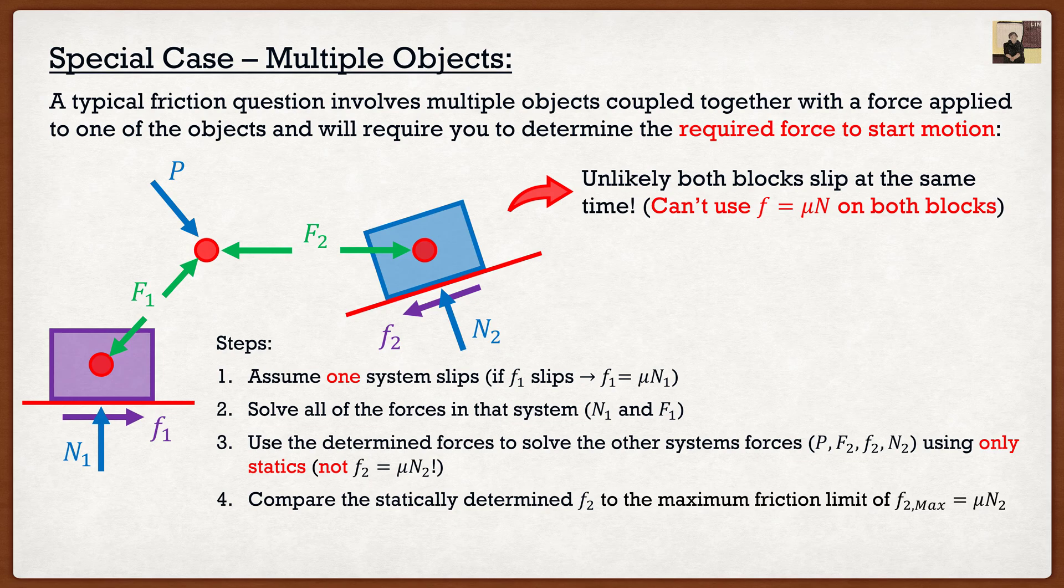If I find that my frictional force is, let's say, 10 kilonewtons and my maximum is 20, we know that yes, this is not going to slip. Our assumption was correct.